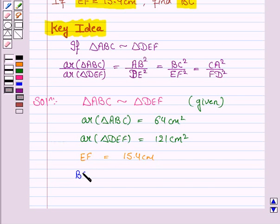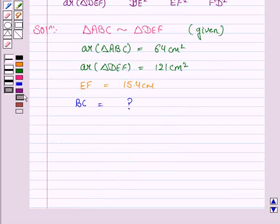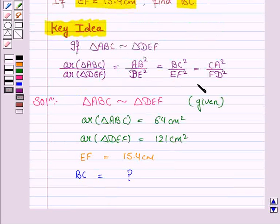And we are given that the length of EF is 15.4 cm and we have to find the length of the side BC.